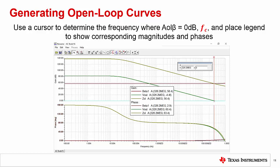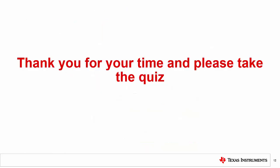Using the legend, we can find the phase of loop gain at this frequency and determine our phase margin, which is around 60 degrees in this case. The recommended feedback and gain resistor values provided in the datasheets of current feedback amplifiers typically try to provide around 60 to 65 degrees of phase margin. That concludes part 3 of our current feedback amplifier video training series. Thank you for watching and please take the quiz.